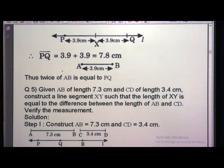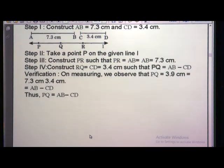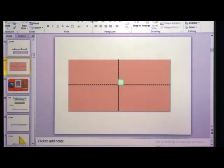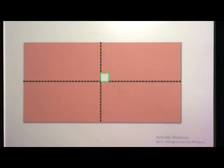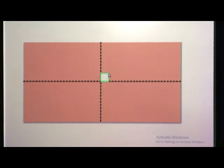The next example is of the same kind, where we are given two different line segments and need to measure the third line segment. Now we are going to see about the perpendicular bisector.